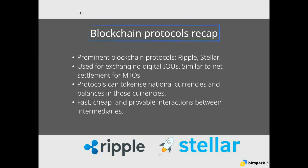Stellar is more about formalizing existing processes — making them provable and creating a transaction history that everybody can see. These IOUs can tokenize national currencies. Many of these protocols are not using a bitcoin or something which has monetary value to move the money; they are more in the business of exchanging IOUs between money transfer companies. They are essentially the database, the protocol, the infrastructure for people to manage their own interactions.